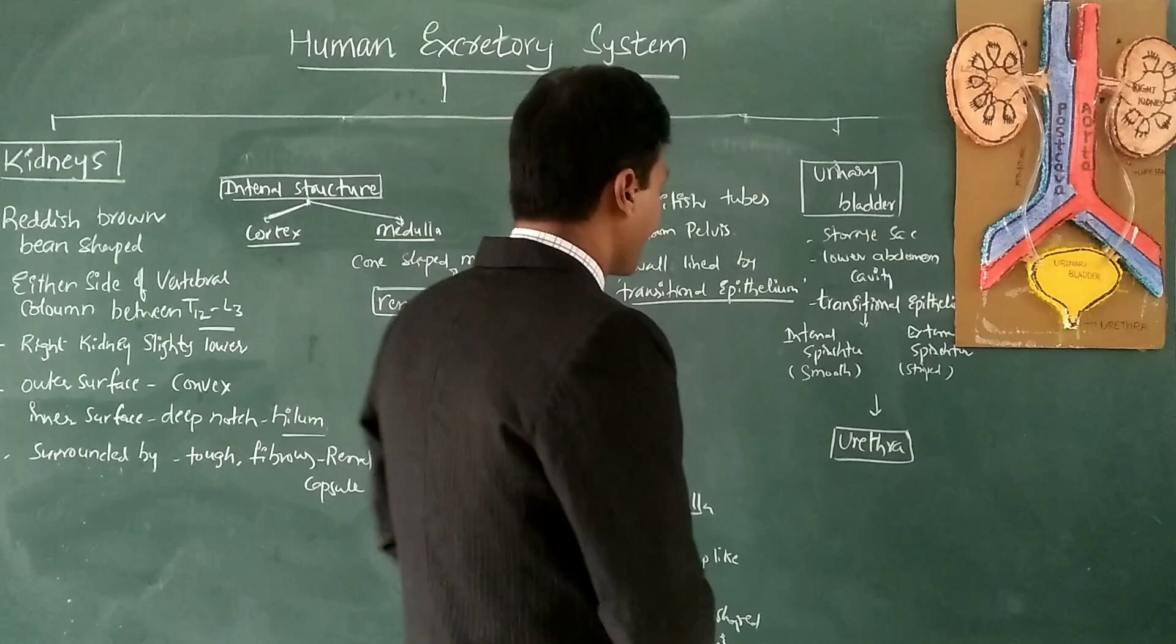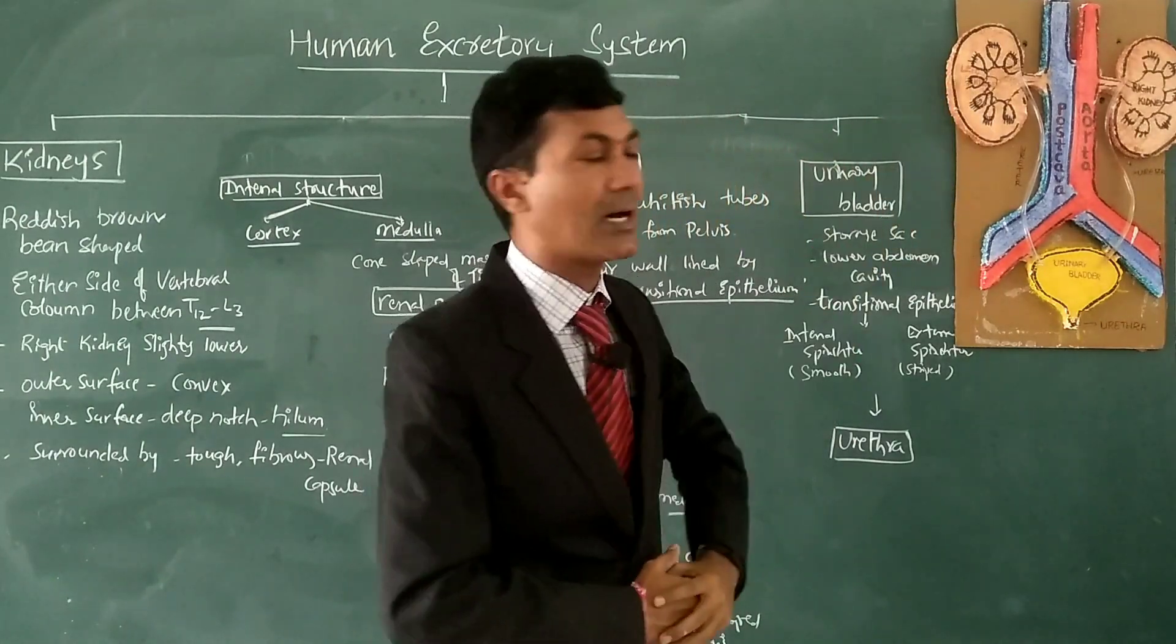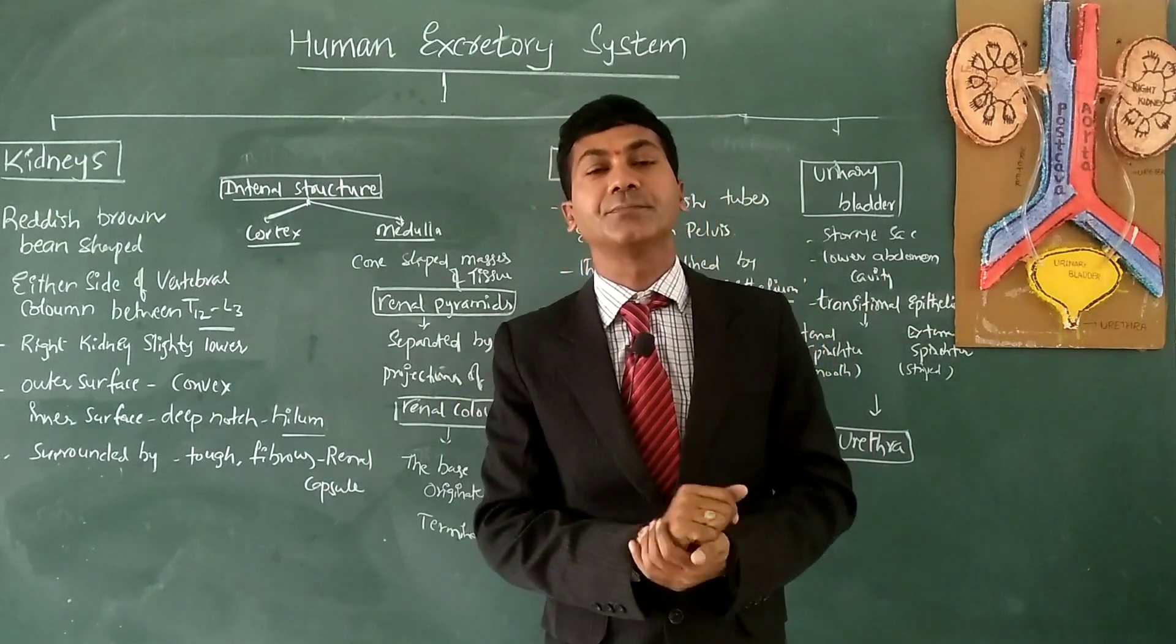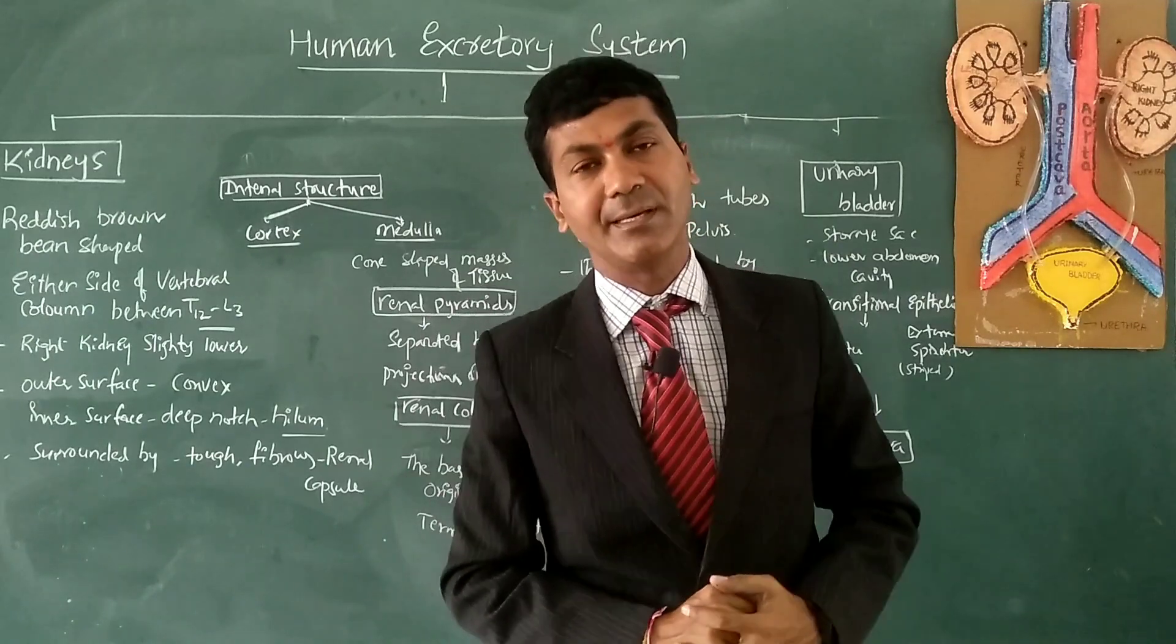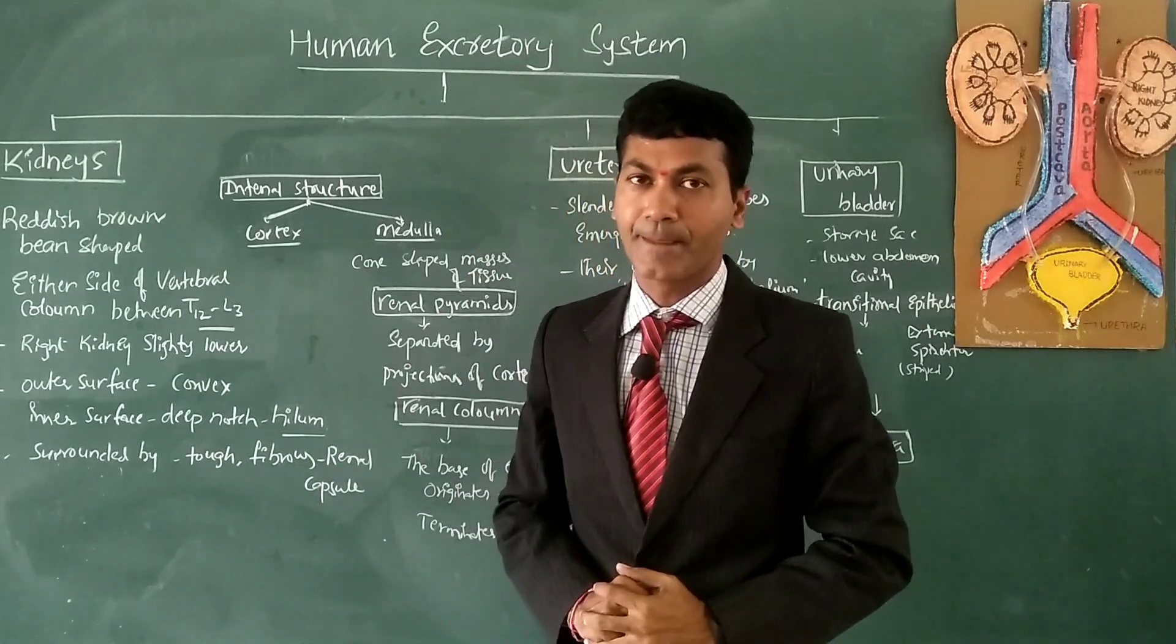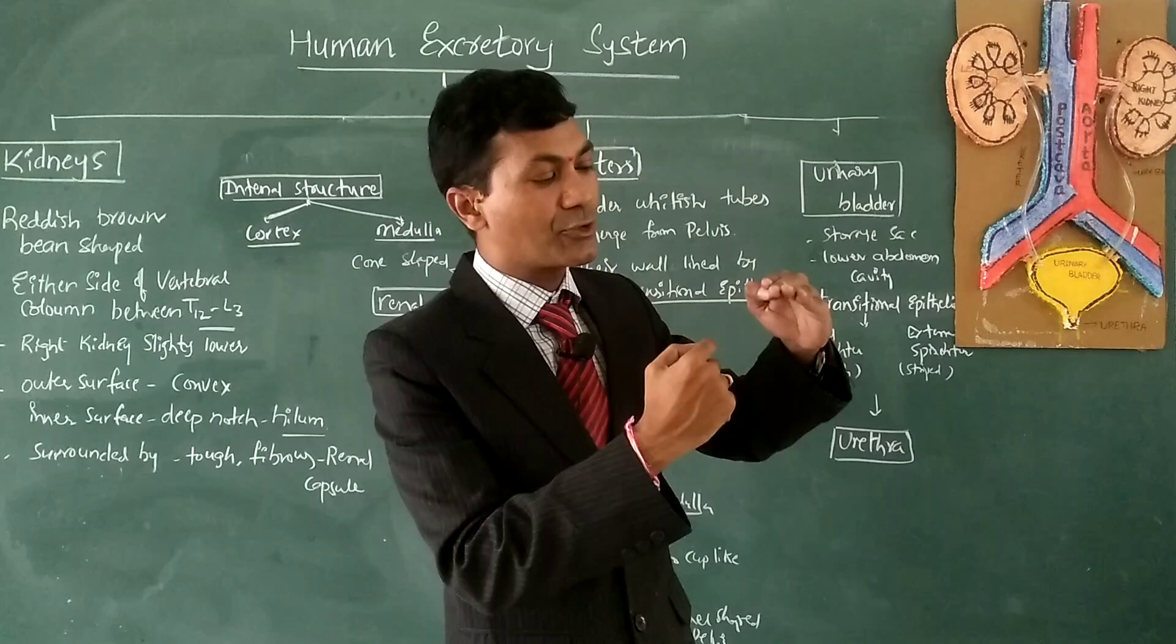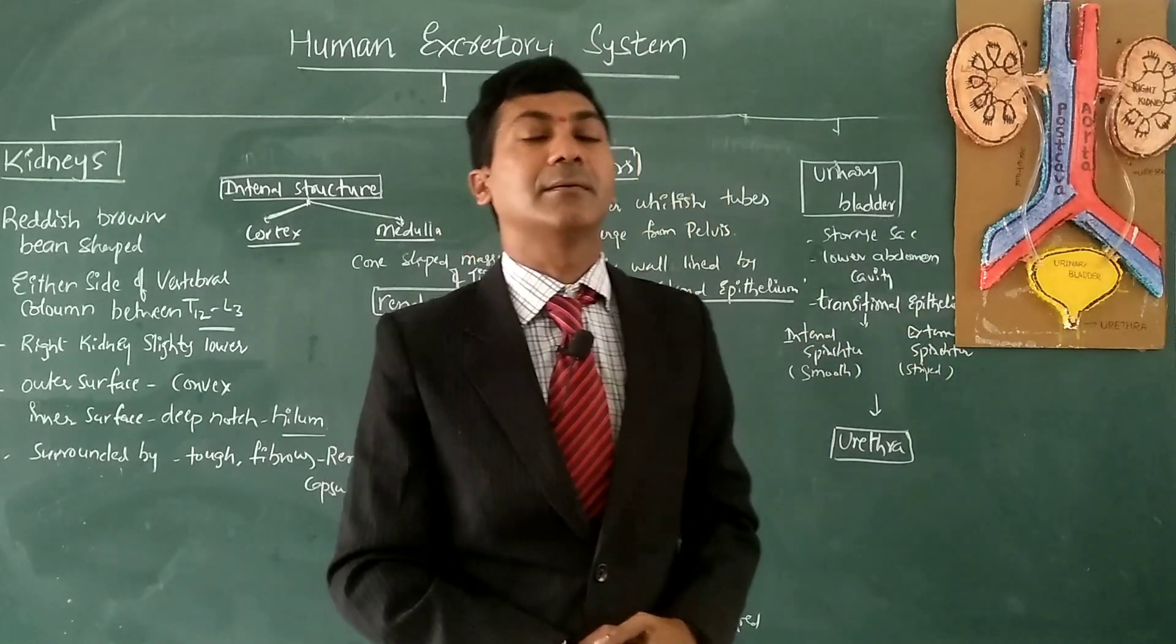Starting with the kidneys, they are reddish-brown bean-shaped organs located in the abdomen cavity and attached to the dorsal wall, either side of the vertebral column. Their exact location is between T12, the last thoracic vertebra, and L3, the third lumbar vertebra.